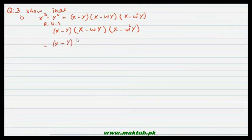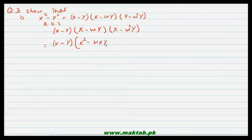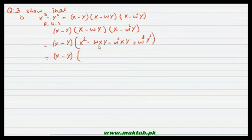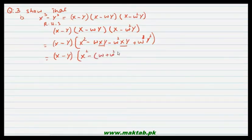x minus y aisi aa jayegi — in do terms ko aapas mein multiply karenge. Jab multiply karenge to yeh hamare paas aayega: x square minus omega xy minus omega square xy plus omega cube y square. Agle step mein jo cheezein common aa rahi hongi unko common lenge. So: x minus y into x square minus (omega plus omega square) into xy plus omega cube y square.